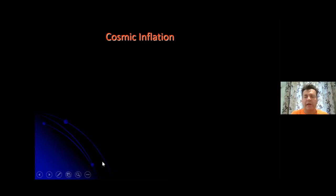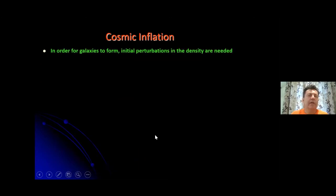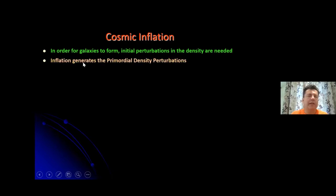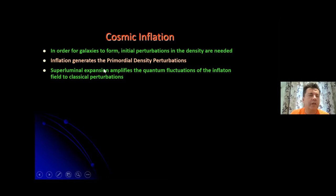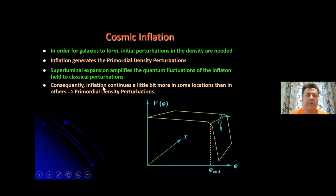There is one aspect I would like to emphasize: it has to do with the perturbations of density that are needed to form galaxies. Inflation can generate them — it generates the primordial density perturbations. The superluminal expansion of space during inflation amplifies the quantum fluctuations of the inflaton field and renders them into classical perturbations through the magic of quantum decoherence. This means that inflation continues a little bit more in some locations than in others, creating the primordial density perturbations.